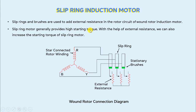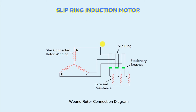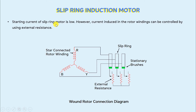A slip ring motor generally provides high starting torque. With the help of external resistance, we can also increase the starting torque of a slip ring motor. Moving forward, the starting current of a slip ring motor is low. However, current induced in the rotor windings can be controlled by using an external resistance. So one more advantage of external resistance is that the current induced in the rotor windings of a slip ring induction motor can be controlled.